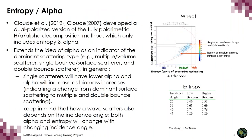We have also been looking at entropy-alpha. Claude et al. (2007, 2012) developed a dual-polarized version of the fully polarimetric H-A-alpha decomposition, which only includes entropy and alpha. It extends the idea of alpha as an indicator of the dominant scattering type — multiple volume scatterer, single bounce (surface scatterer), and double bounce scatterer. In general, single scatterers have lower alpha, and alpha increases as biomass increases, indicating a change from surface to multiple or double bounce scattering. Both alpha and entropy will change with changing incidence angle.